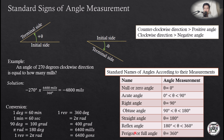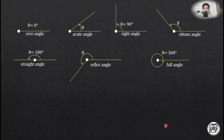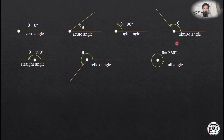A perigon or full angle is where θ = 360°. The illustrations show: zero angle, acute angle, right angle, obtuse angle, straight angle, reflex angle, and full angle or perigon.